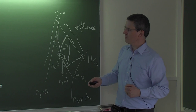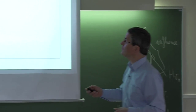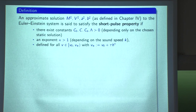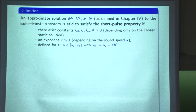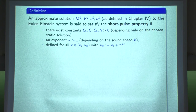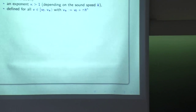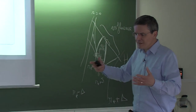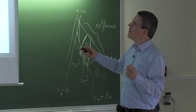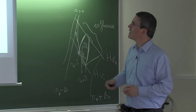To state the result I introduce a definition: an approximate solution to the Einstein-Euler system is said to satisfy the short-pulse property if there exist constants depending on your static solution, and an exponent kappa depending on the sound speed, such that the approximate solutions are defined within a specific time interval where the maximal time V star is the initial time plus some amount quantified in terms of parameters tau and H. You need two properties: the mass remains of order 1/H on one side, and can go to zero with this order on the other.